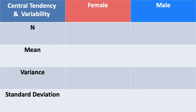We're looking at a table that helps us identify values or measures of central tendency and variability. The n represents the number of people in both groups, male and female. We also have the mean, variance, and standard deviation. We know offhand that we have five females and five males, so we can fill those into the chart and fill out the remaining data as we go.